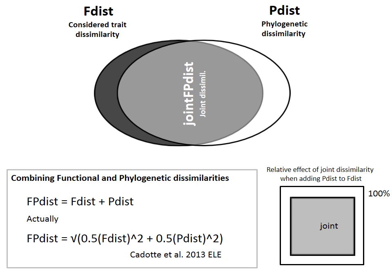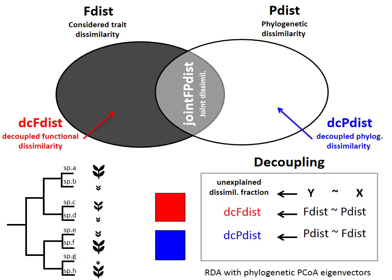We can thus predict that when combining traits and phylogeny with this approach, species that are functionally different will be even more different, because we are essentially summing twice their large dissimilarity. We are not sure if this complies exactly with the real aim of combining functional and phylogenetic dissimilarity. Instead, we propose an approach to quantify the extent of trait dissimilarity which is independent of phylogeny, which we call decoupled functional dissimilarity.